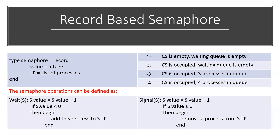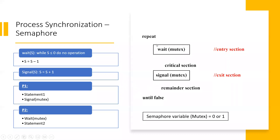There are three different sections in the semaphore: the entry section, then the critical section, and then the exit section. In the entry section, a process requests to occupy the critical section — this is where the wait operation is performed. When a process enters and completes its execution in the critical section, the signal operation is performed.